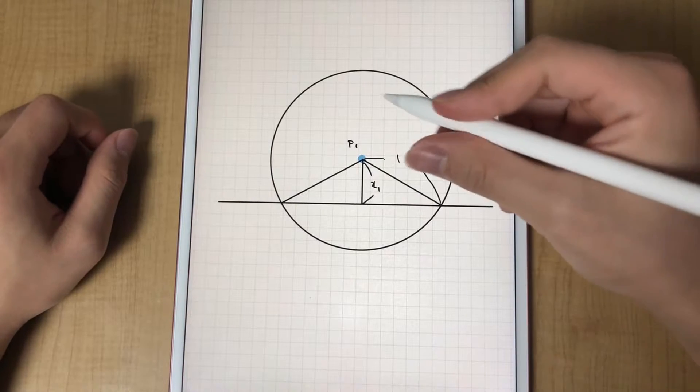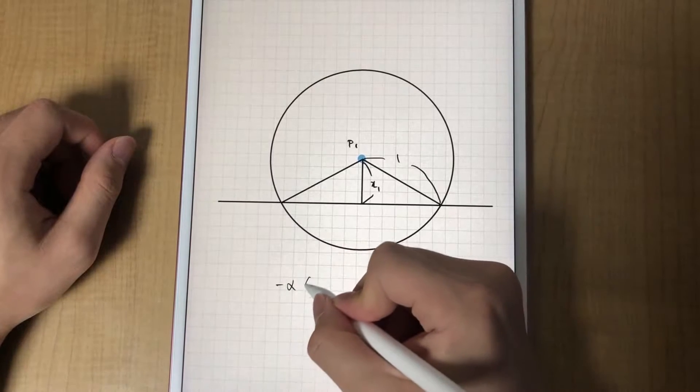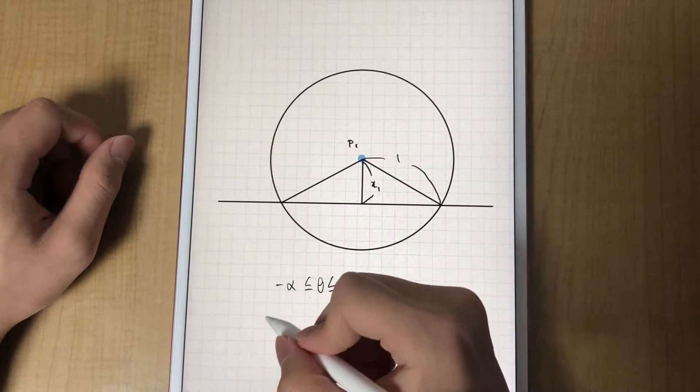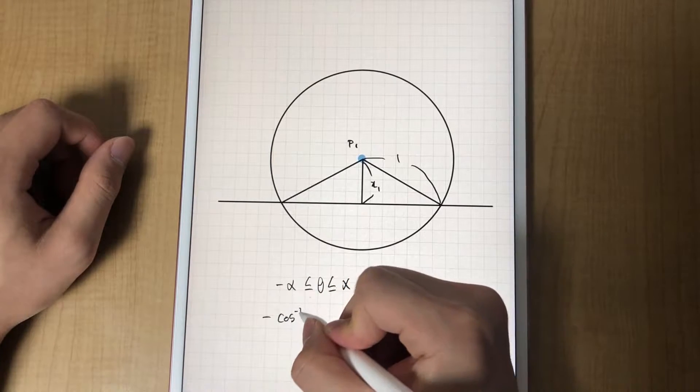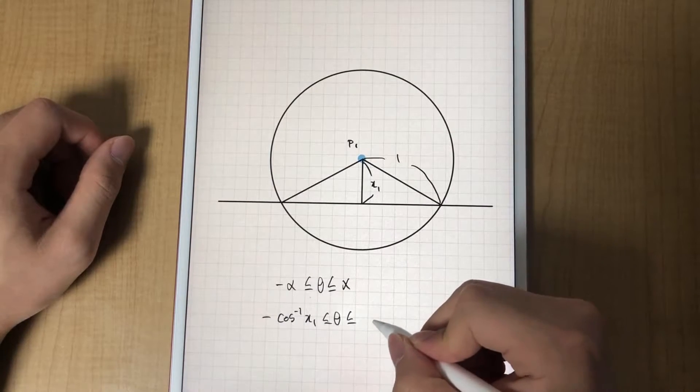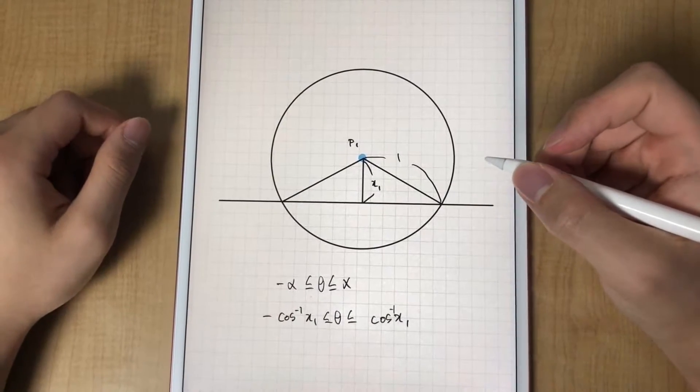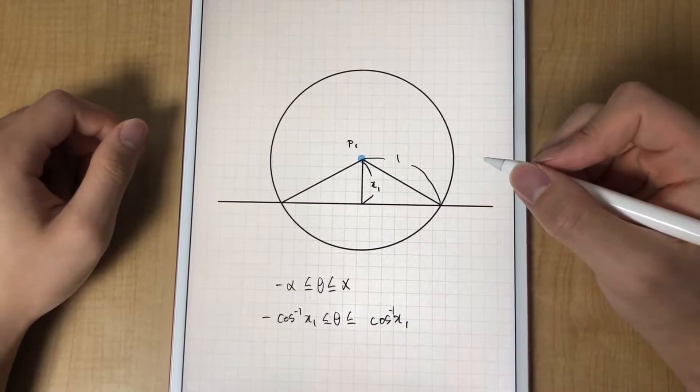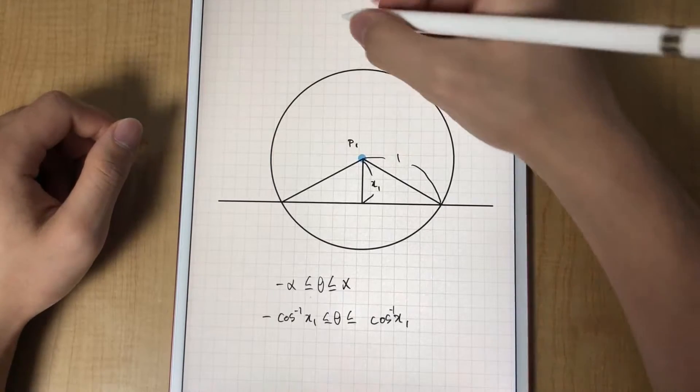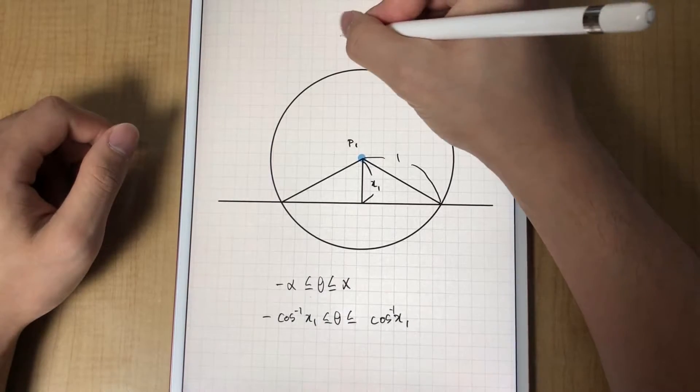For P1 with distance x1, the zeta has to be between minus alpha and alpha, which can be written as minus inverse cosine x1 and inverse cosine x1. Thus for this particular P1, the probability it will cross the line is 2 inverse cosine x1 over 2 pi.